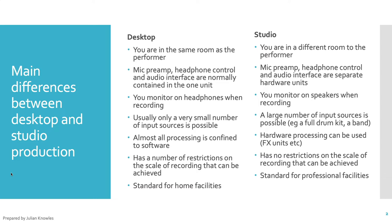Now let's look at the input and output side with the patch bays included. On the left in red is the record chain or input side to Pro Tools; on the right is the output or playback side from Pro Tools to the monitor system. We take a microphone, plug it into wall plate input one in the live room, and through the wall we connect to the patch bay in the control room where it appears as 'Live Room Microphone 1.' Through a process called normaling — a patch bay feature where the top row is always connected to the bottom row — that signal passes down to the console mic preamp input one.